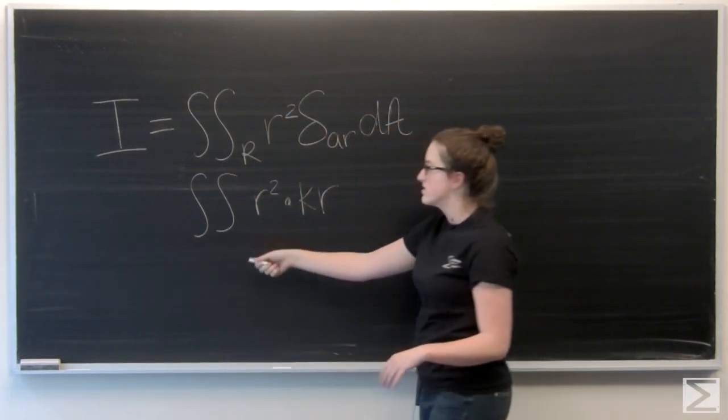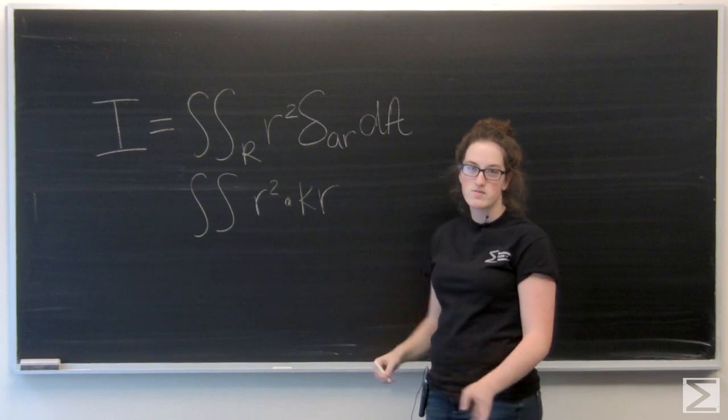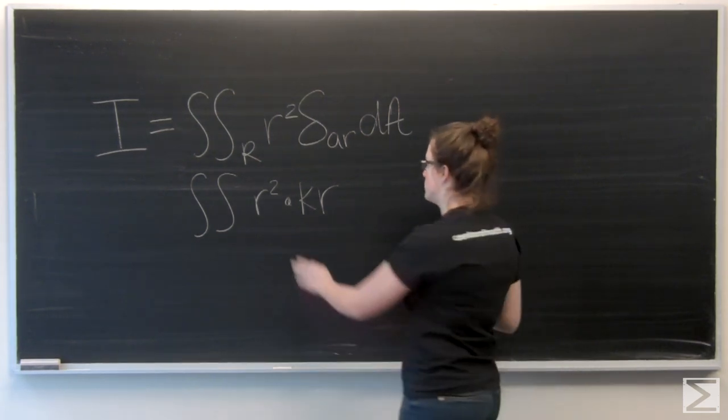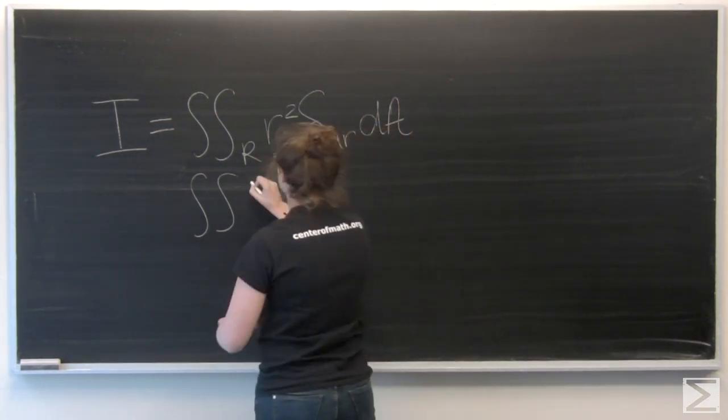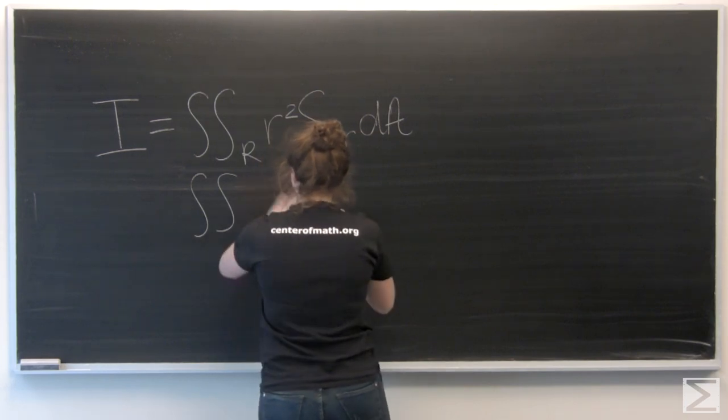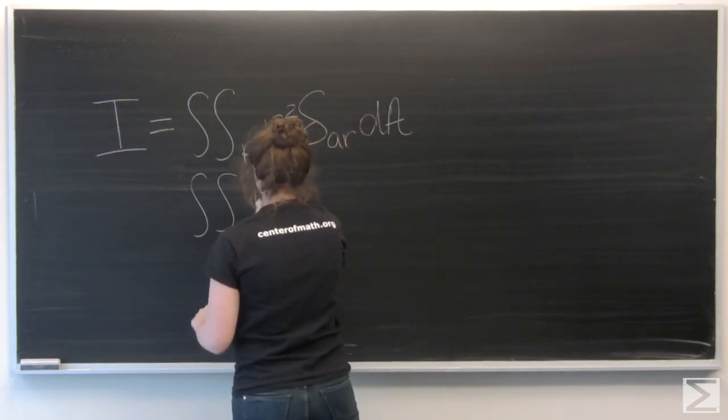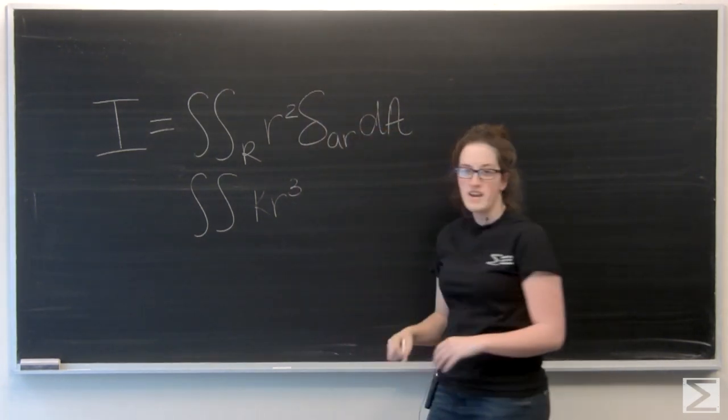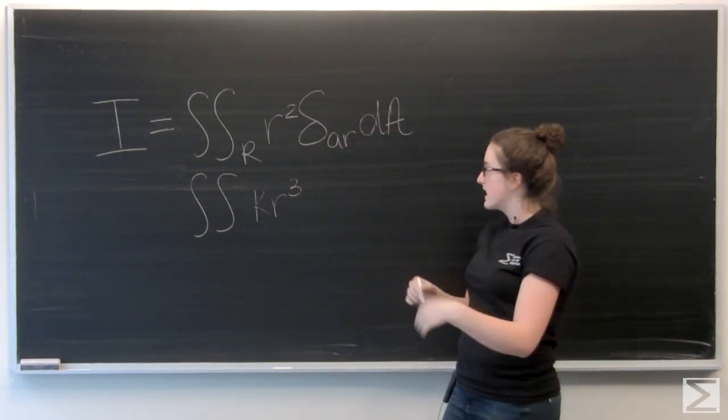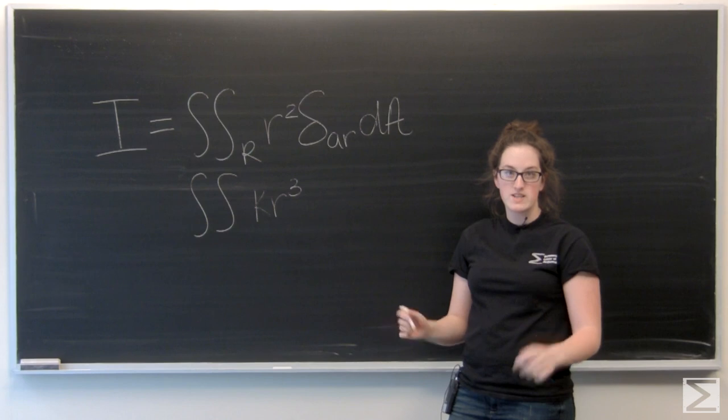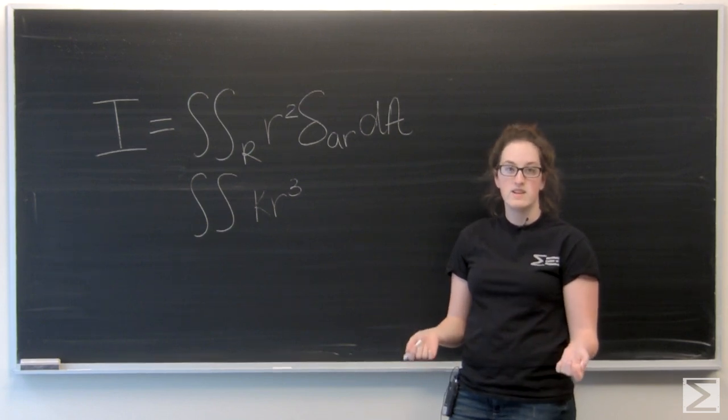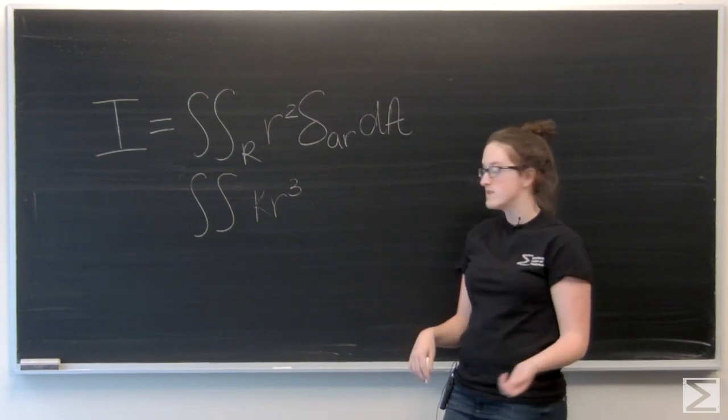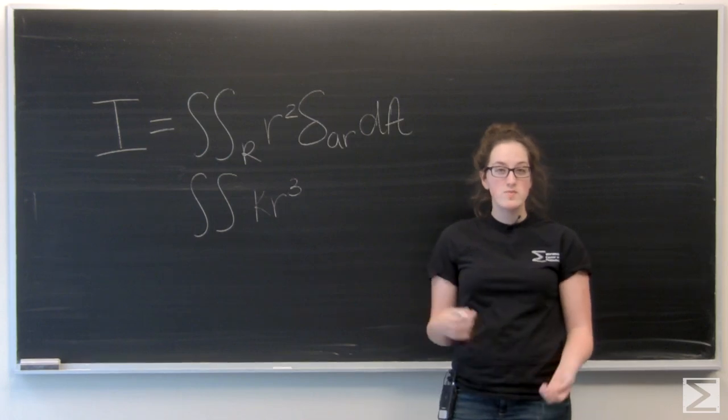So I have the double integral of r squared times kr, so kr cubed. And then I have da, so dx dy if I were in Cartesian coordinates, but r dr d theta if I'm in polar coordinates. So I'm going to switch to that r cubed to an r to the fourth.